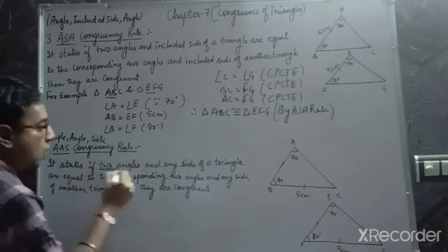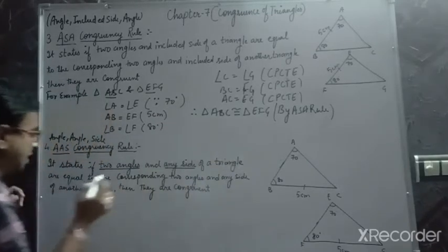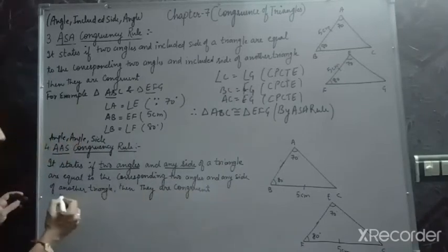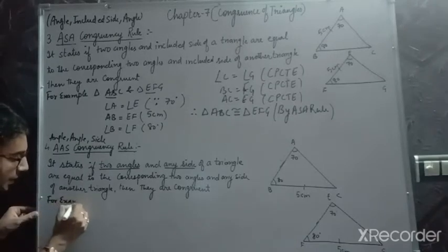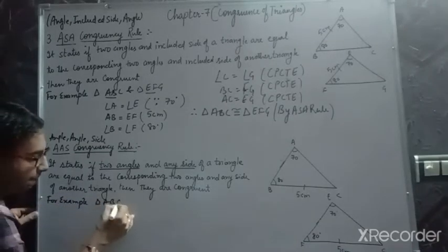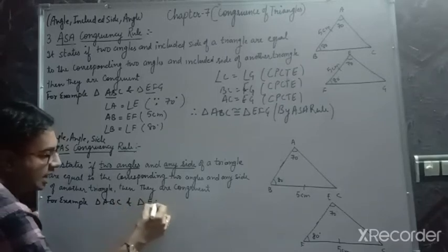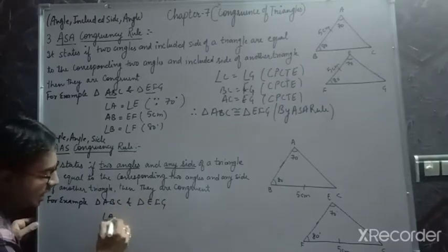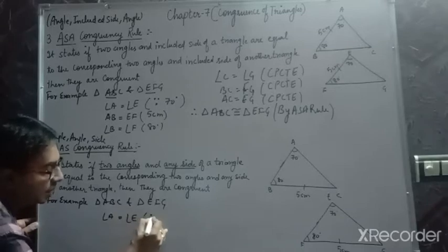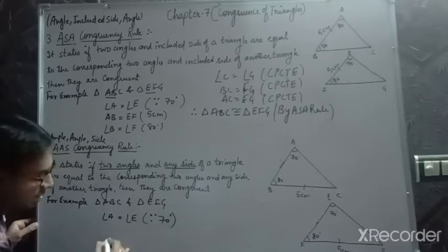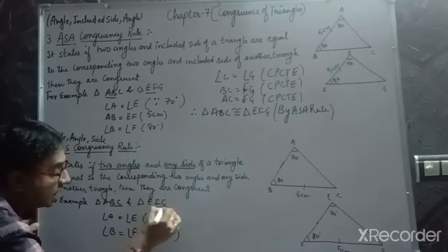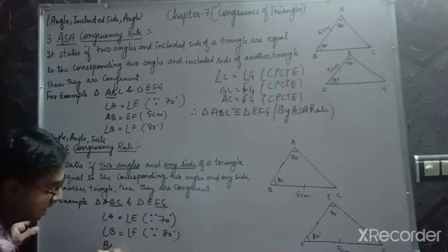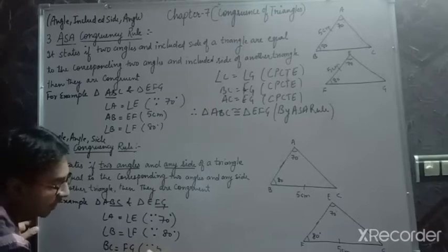It says that if two angles and any side of a triangle are equal to the corresponding two angles and any side of another triangle, then they are congruent. For example, in triangle ABC and triangle EFG: angle A equals angle E, both are 70°; angle B equals angle F, both are 80°; and BC equals FG because both are 5 cm — taking a side that is not the included side.